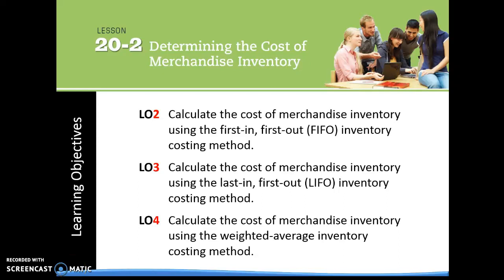Pay 20-2 is determining the cost of merchandise inventory. We have three learning objectives. You need to be able to calculate the cost of merchandise inventory using the first in, first out inventory costing method, which is called FIFO. You need to be able to calculate the cost of merchandise inventory using the last in, first out inventory costing method, which is called LIFO. And then you also need to be able to calculate the cost of merchandise inventory using the weighted average inventory costing method.